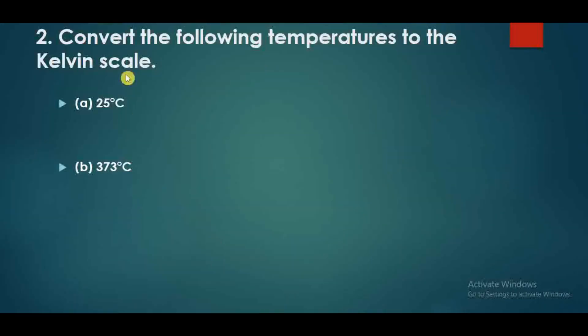Question number 2: convert the following temperatures to the Kelvin scale. To convert Celsius to Kelvin, we add 273 to the Celsius value. So 25 plus 273 gives 298 Kelvin. You should remember how much Kelvin is in 0 degrees Celsius - it is 273 Kelvin. For the next value, adding 273, we get 646 Kelvin.